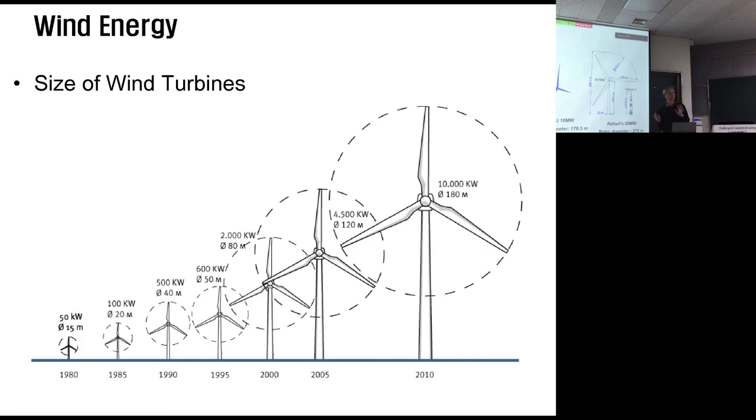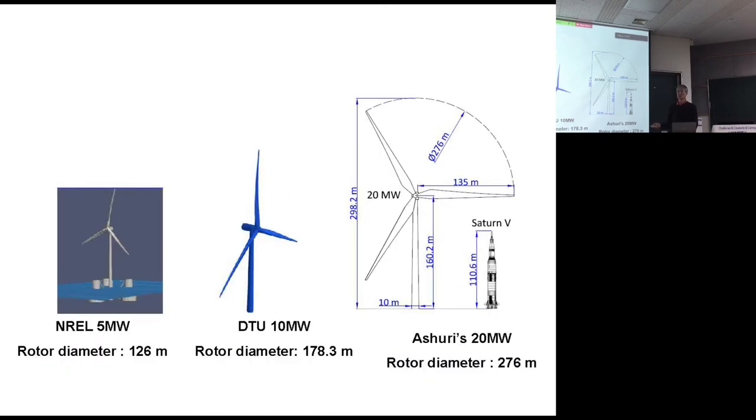Current situation is this one is commercialized. You can buy if you have money, you can buy from company of this size. This one is on the edge of commercialization. Within one or two years you can buy this size. It's a big one, diameter. This one is only under development stage: 20 megawatts, 300 meter diameter, 280. Bigger and bigger.